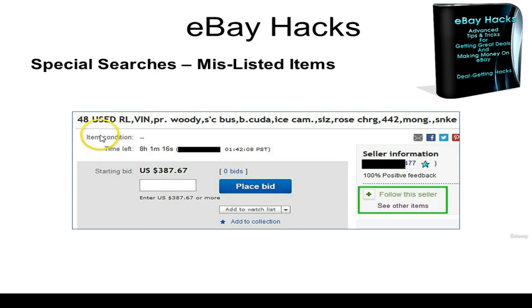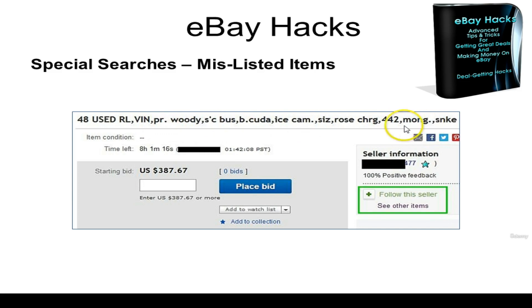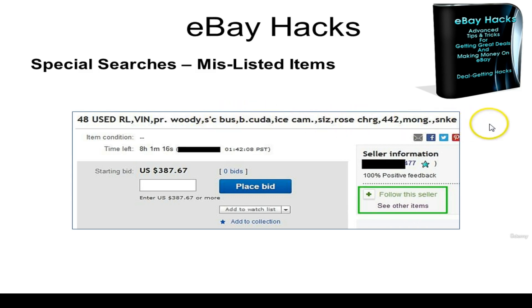Here is one example of what came up. It says '48 used RL, VIN, PR' — this is one of the most horrendous listings I've ever seen. This seller used a bunch of abbreviations in an effort to put as many items into their title as possible. The problem is people aren't searching for 'B.cuda,' 'Icecam,' or 'CIS.' It's a terrible way to load your title with a bunch of really useless search terms.